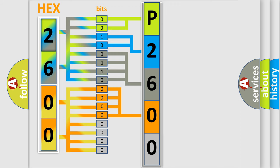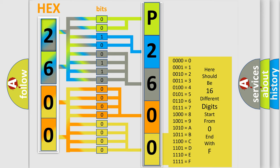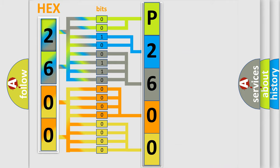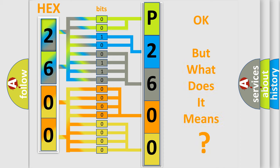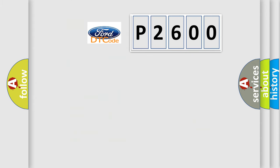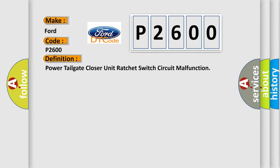A single byte conceals 256 possible combinations. We now know in what way the diagnostic tool translates the received information into a more comprehensible format. The number itself does not make sense if we cannot assign information about what it actually expresses. So, what does the diagnostic trouble code P2600 interpret specifically for Infiniti car manufacturers? The basic definition is: power tailgate closer unit ratchet switch circuit malfunction.